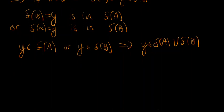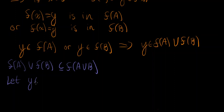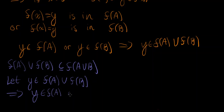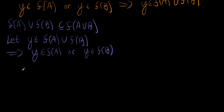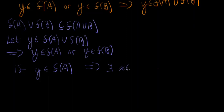Now let's go the other direction: we're going to show that f of a union f of b must be a subset of f of a union b. Let y be in f of a union f of b. That implies, by the definition of set union, that y is in f of a or y is in f of b. Going case by case: if y is in f of a, then that implies there exists an x in a, such that f of x is equal to y.